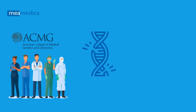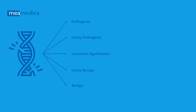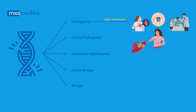This organization has defined guidelines that classify genetic variants into five categories: pathogenic, likely pathogenic, uncertain significance, likely benign, and benign. A variant classified as pathogenic is considered to have a high likelihood of causing or contributing to a specific genetic disorder.